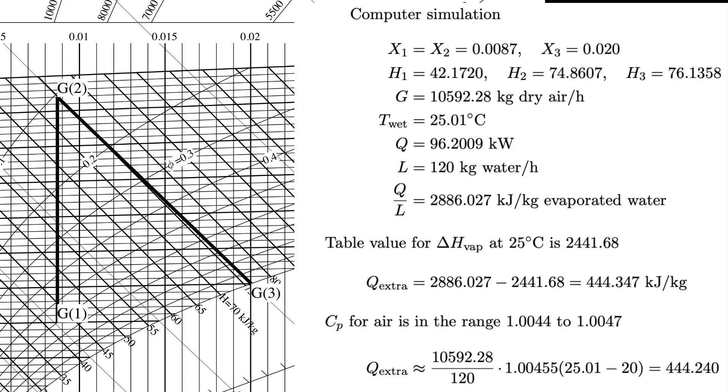For any doubtful viewers out there, let's compare with the computer simulation instead. In the computer simulation, I get the extra energy needed as 444.347 kilojoules per kilogram, and if we simplify a bit and take an approximate average of the heat capacity for the air, we get the extra energy just for heating air as 444.240. So, the same.